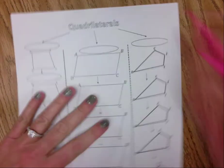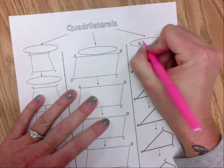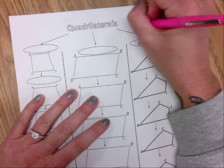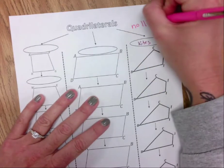Today I'm going to talk about kites, which is a special type, that's not pink, of quadrilateral. It has no parallel sides.